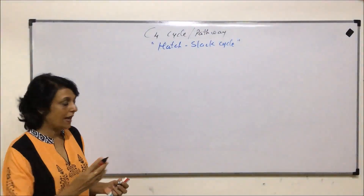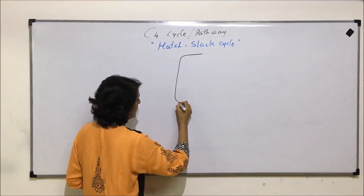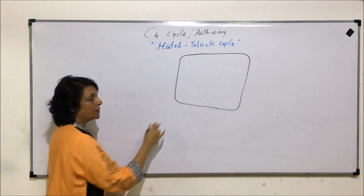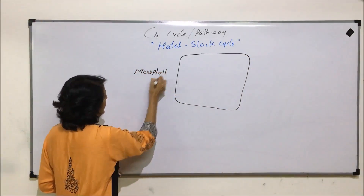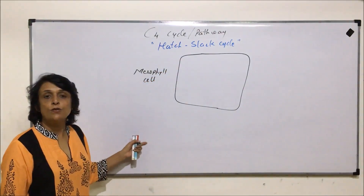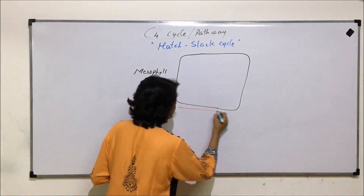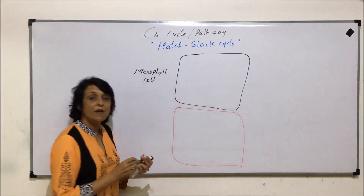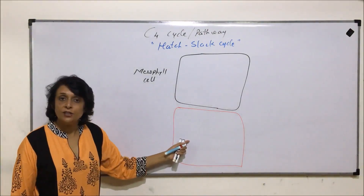Let us now see the cycle. There are two cells which are involved. The first or upper cell which we are drawing is the mesophyll cell, and the second cell where this reaction is going to continue is the bundle sheath cell. We are drawing only two cells but as we have already seen, there are many layers of mesophyll cells and deeper there is a bundle sheath.